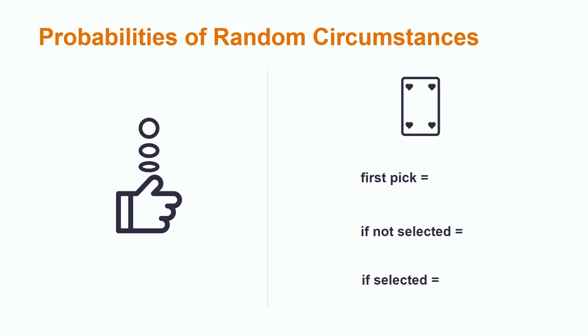However, let's say that we want to know the probability of selecting a four of hearts when we choose two cards from a deck of 52 cards. This is known as a dependent event because on our first pick, our probability of getting a four of hearts is 1 in 52.